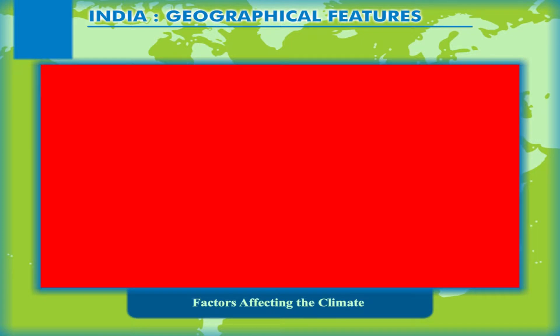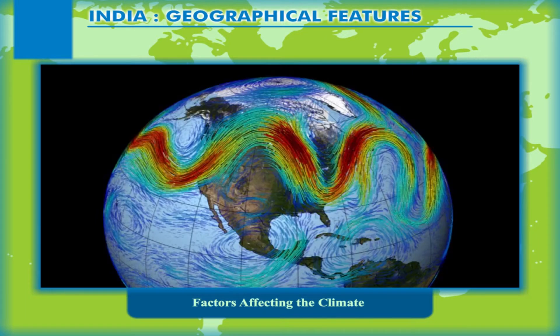The storms called Western Disturbances, originating in the Mediterranean region, and the upper air circulations called jet streams also influence the Indian climate.